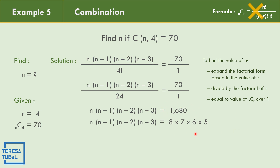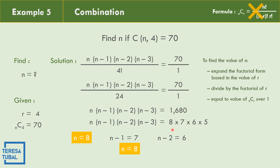It is not possible to use 7 times 6 times 5 times 4 because that does not equal 1680. So the value of N is equal to 8.